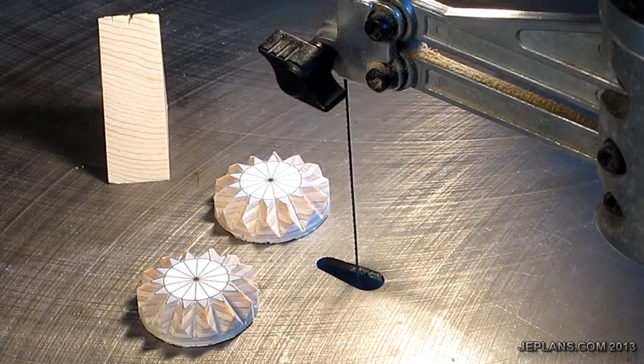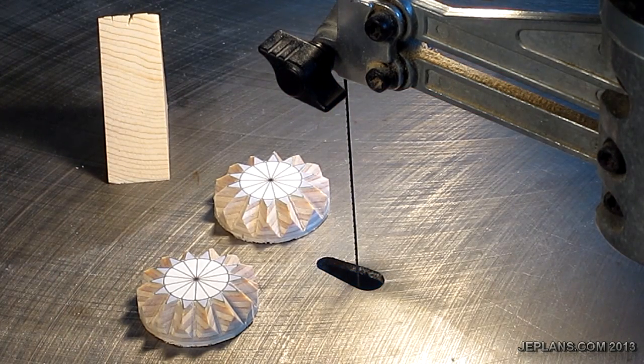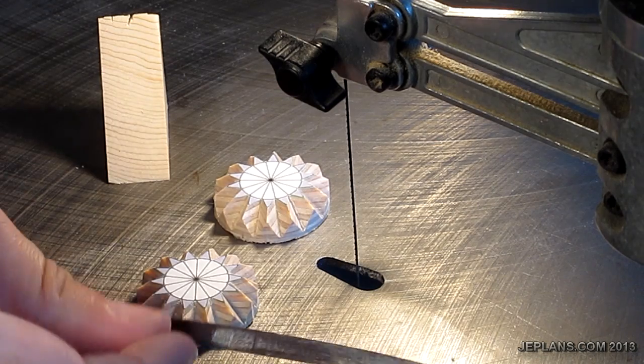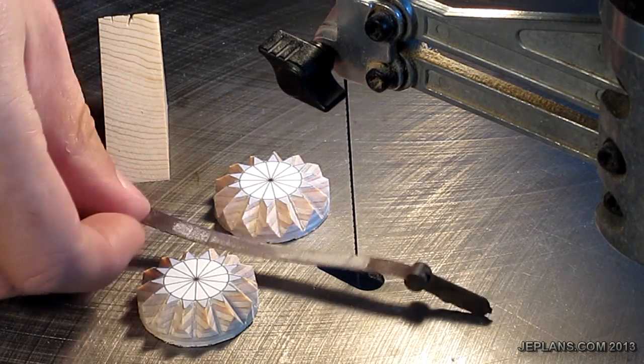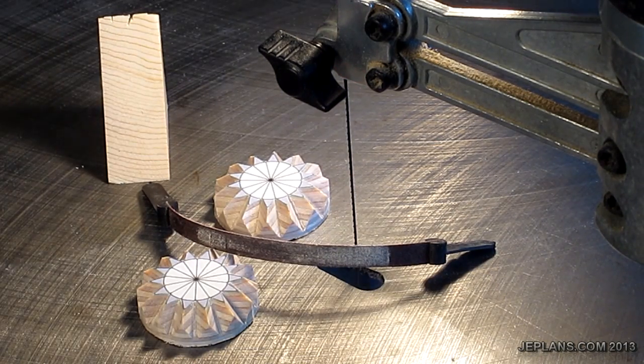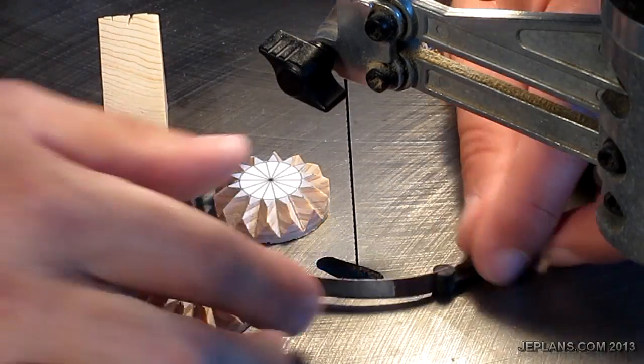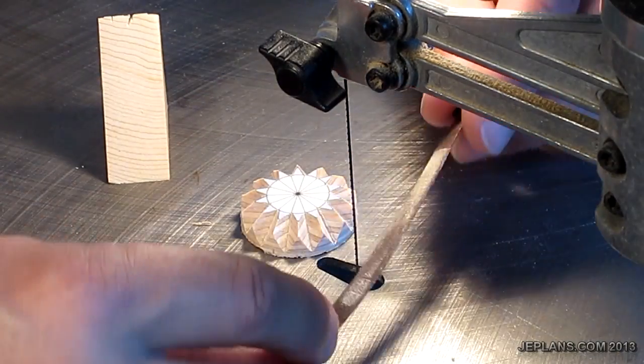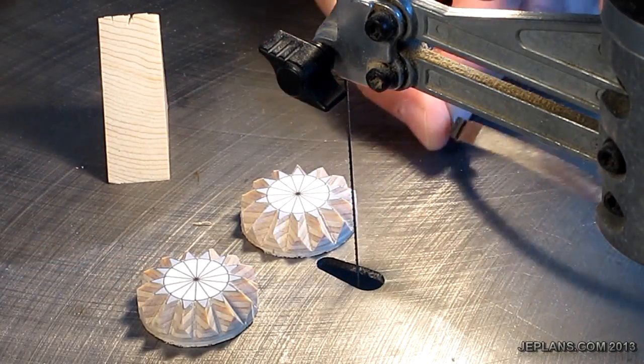For that, I'm going to use one of these sanding strips that fits on my scroll saw. I certainly could do that on a disc sander or something like that. This is quick and easy, so we'll do that.